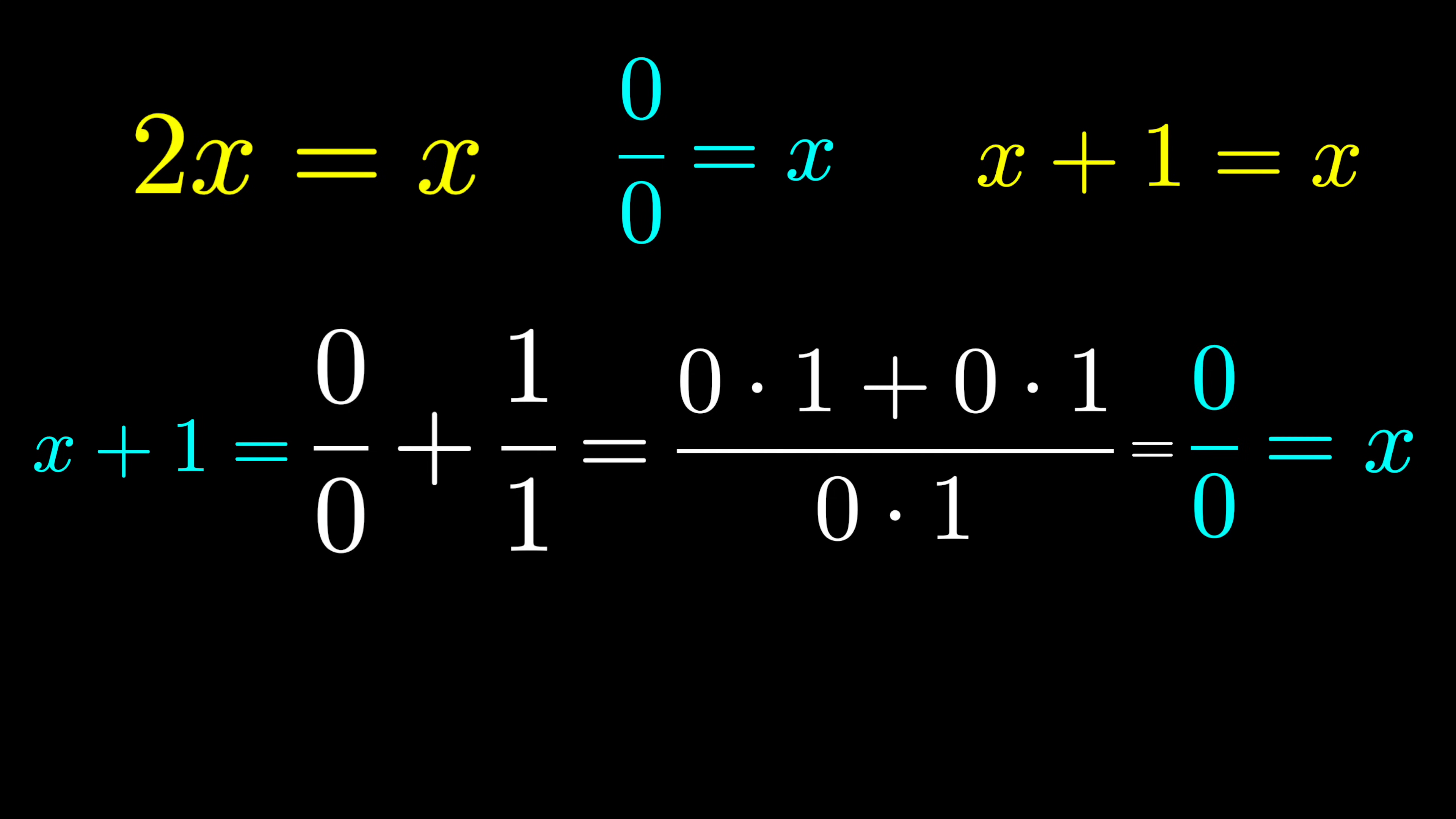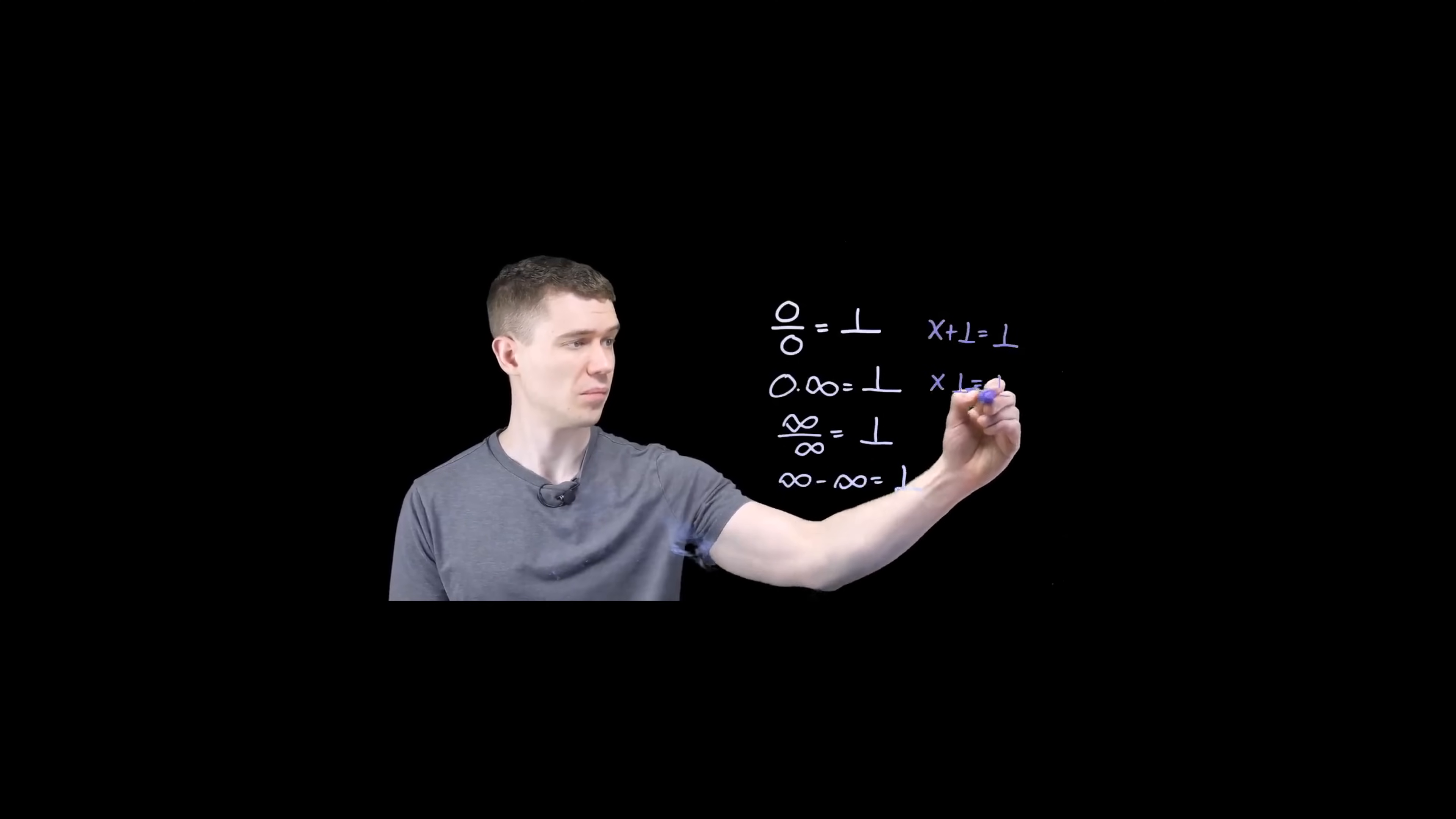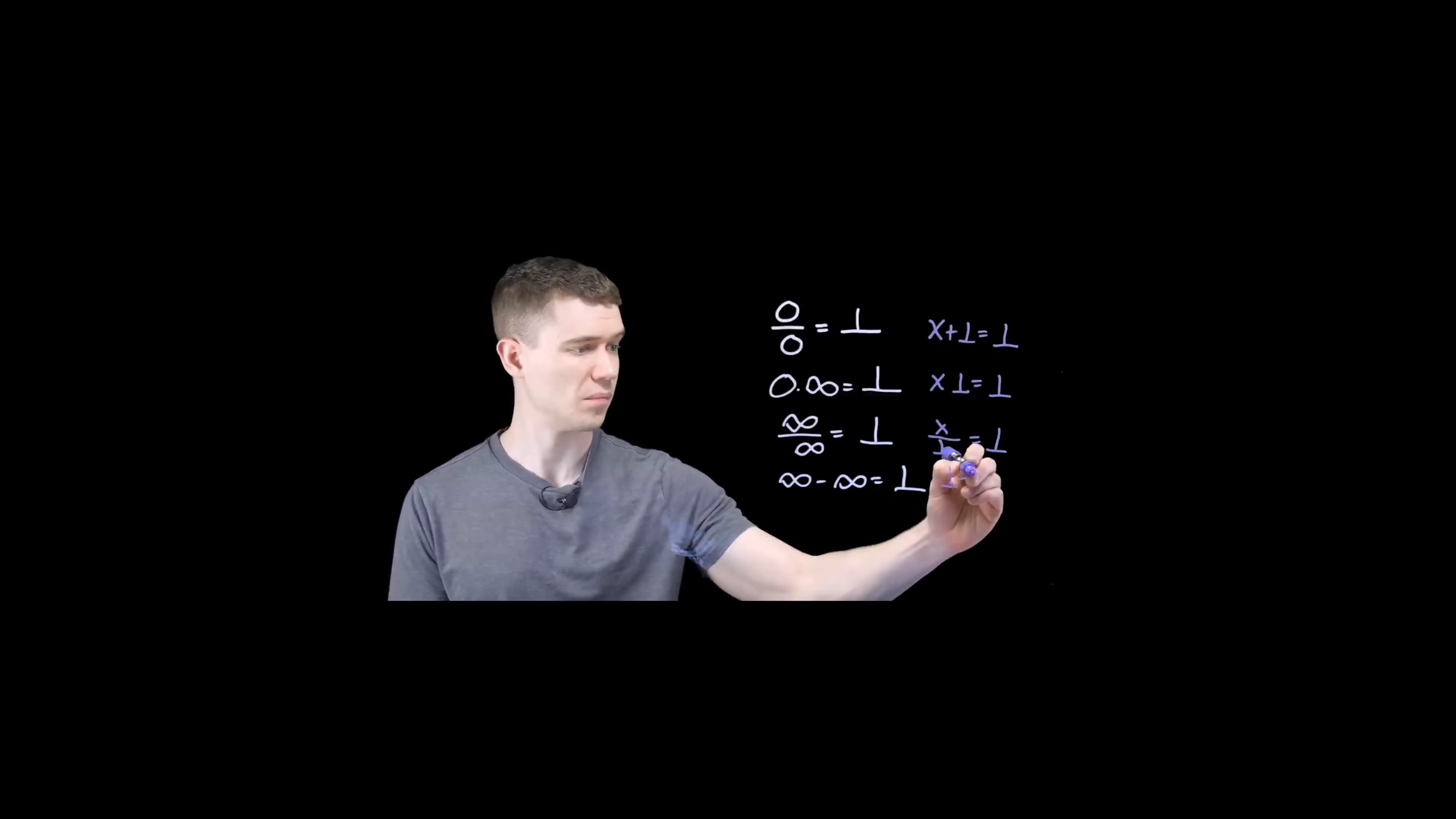But there is an idea that satisfies both of these equations, and that's infinity. Although infinity isn't a number, we typically think two times infinity is the same as infinity, and infinity plus one is infinity. This goes along nicely with a video I did previously on dividing by zero, where wheel algebra defines zero over zero as the nullity element, which is essentially a stronger absorbing element like infinity.